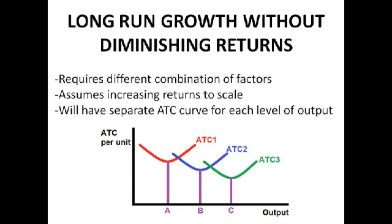It is possible to have long run growth without diminishing returns. Typically you're going to need to move into a larger factory or maybe introduce specialisation. To have long run growth you're going to have different combinations of factors. The red curve at A is going to be fewer workers in a smaller factory. And at C we've got a larger factory and more workers. We also have to assume increasing returns to scale. So as output increases the average total cost per unit is going to fall. This is primarily due to economies of scale. And we've got a separate average total cost curve for each level of output because as the level of output increases we're going to have different costs. Although due to economies of scale average costs have actually fallen.